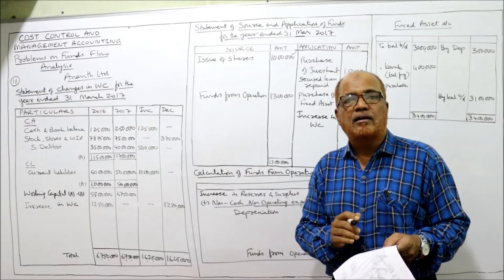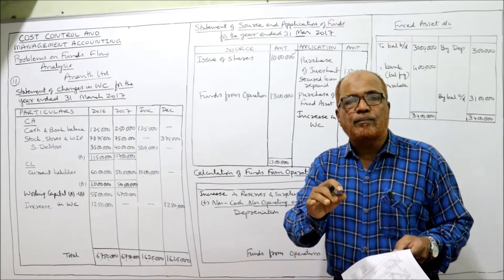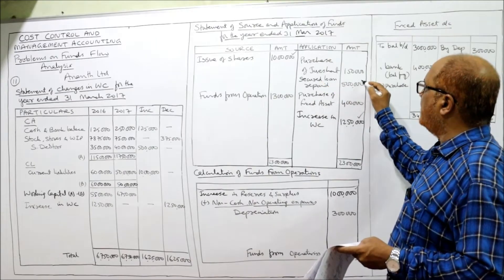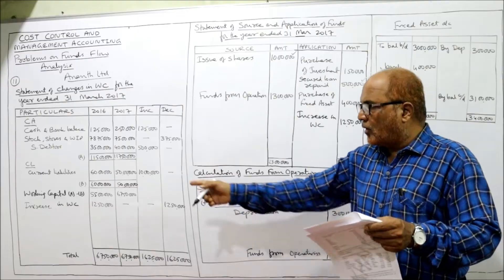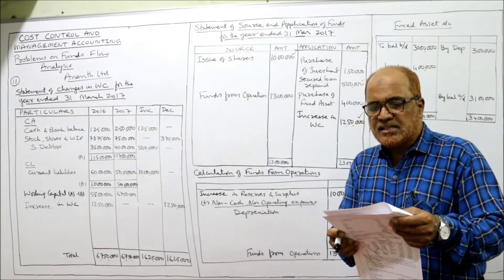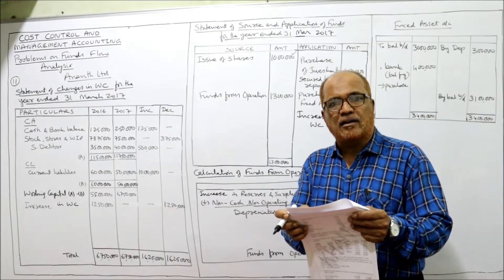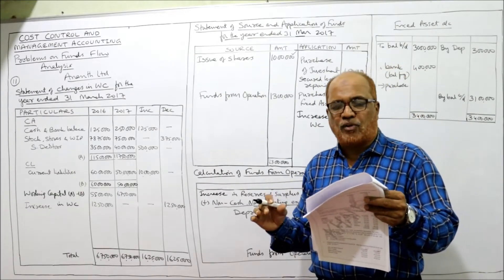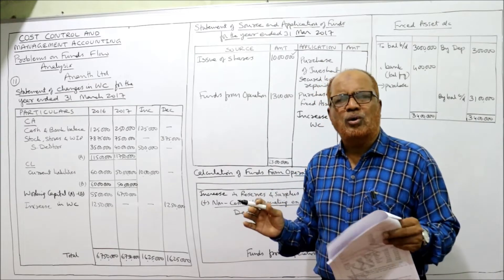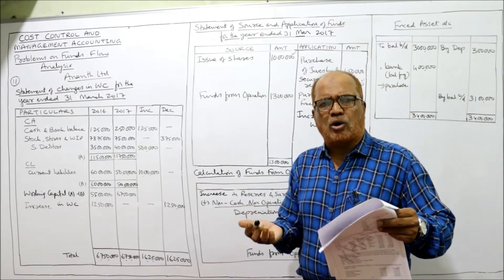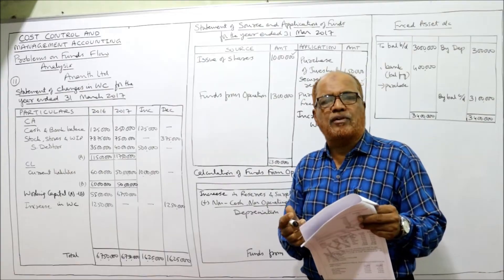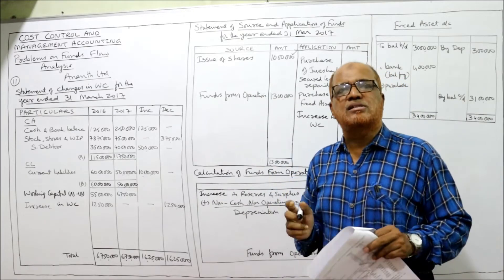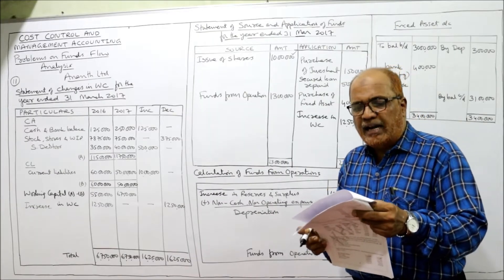Next comes secured loan: last year 40 lakh, current year 35 lakh — that means 5 lakh rupees loan was reduced, meaning the business repaid the loan. Application side: secured loan repaid 5 lakh. Current liability already taken — ignore. Fixed assets: last year 30 lakh, current year 31 lakh. The adjustment states net profit after provision for taxation and proposed dividend was 1 lakh, but we don't require net profit because we are calculating funds from operation using reserves and surplus — this profit is already included there.